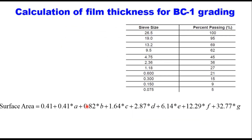Let us take one example. This is the grading for bitumen concrete, with sieve sizes from 26.5 mm to 0.075 mm, using the midpoint of the grading suggested in MRTH specifications. Surface area is calculated using this equation: 0.41 is taken for the maximum size of 26.5 mm.